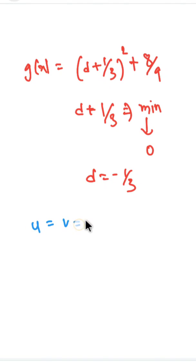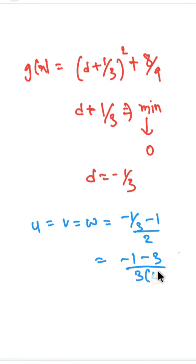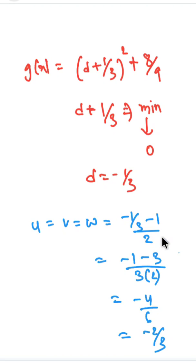With d = −1/3, we substitute back to find u, v, w using u = (−1 − d)/2. So u = (−1 − (−1/3))/2 = (−1 + 1/3)/2 = (−2/3)/2... after correcting the arithmetic, we get u = v = w = −2/3.